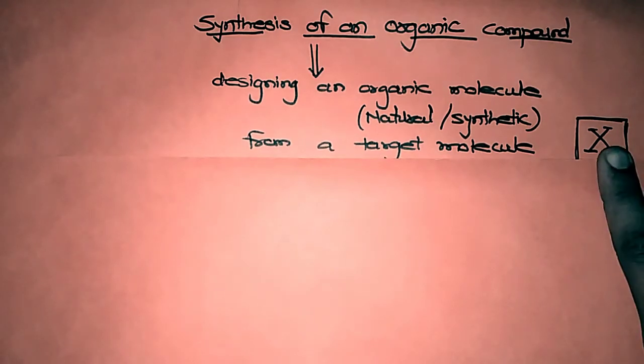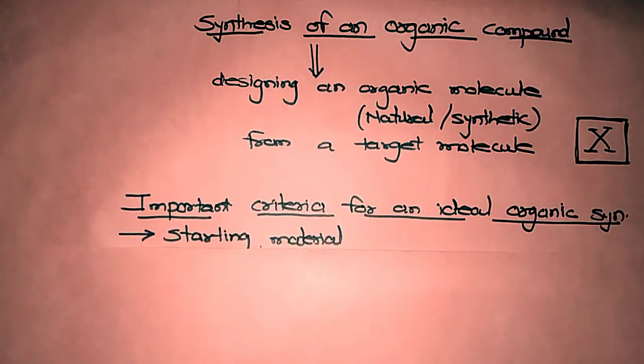Suppose if we are given an opportunity to synthesize a product X, then there are many criteria on which we have to focus. In this case, we will focus on the four main criteria. First is starting material. The starting material or the target molecule should be easily available and it should be available at low cost.